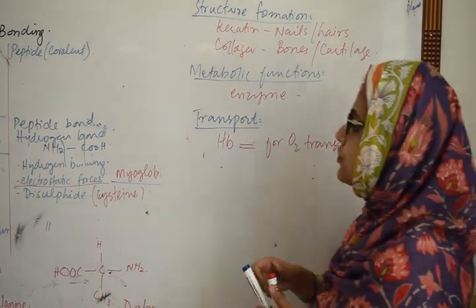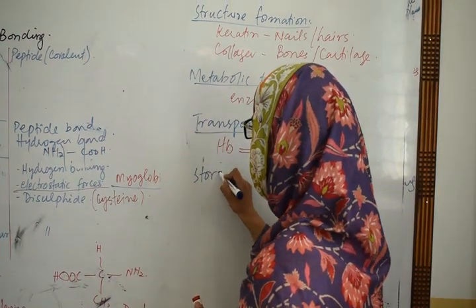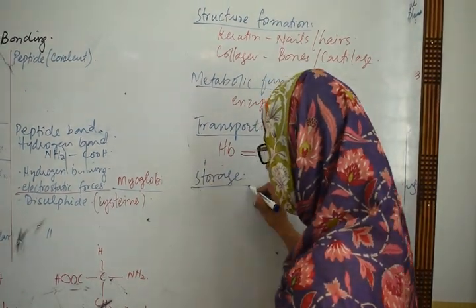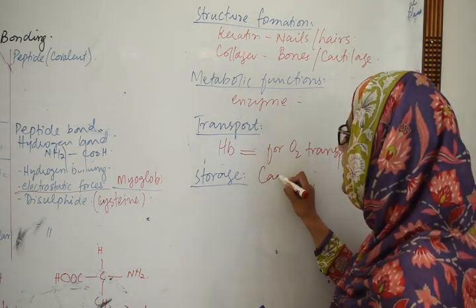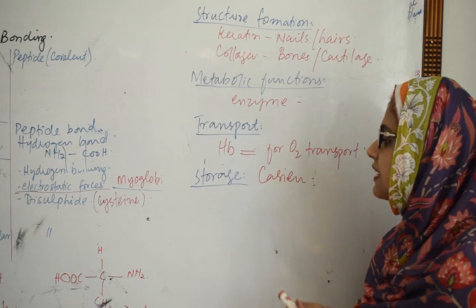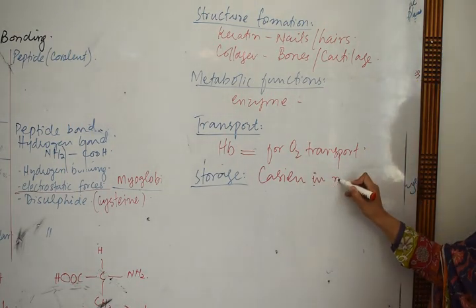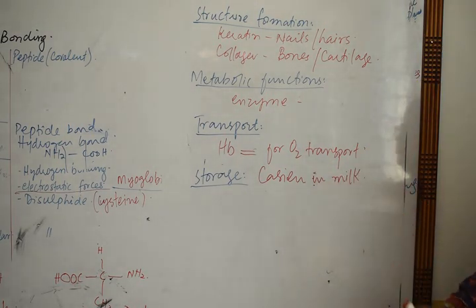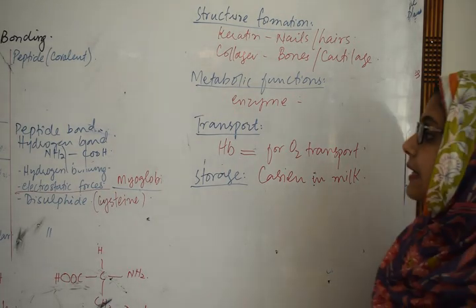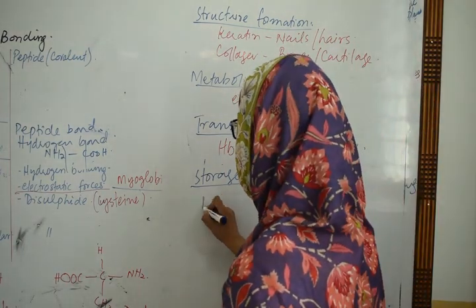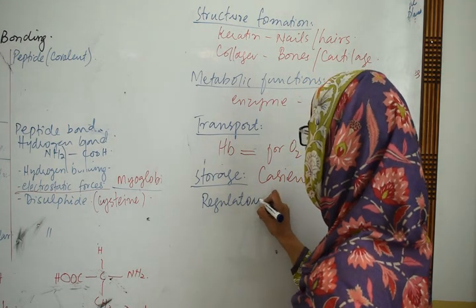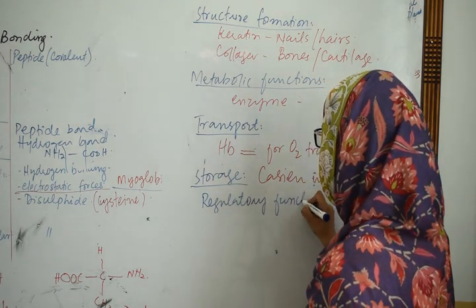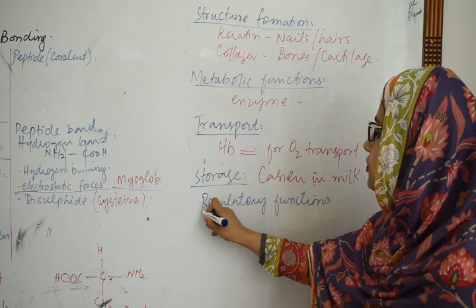The fourth function is storage proteins. For example, casein protein found in milk plays a storage role. The fifth function is regulatory functions — hormones perform regulatory and signalling functions in the body.